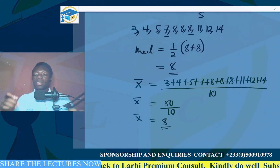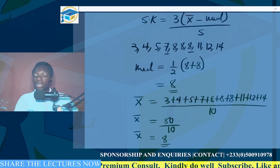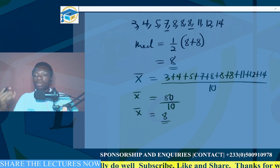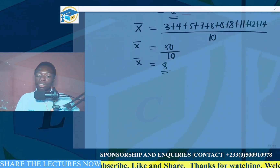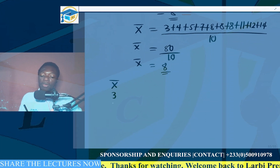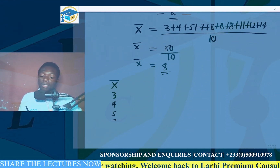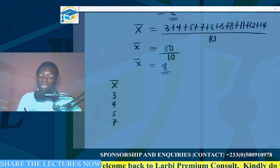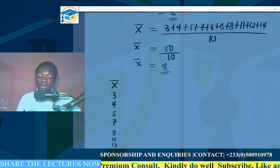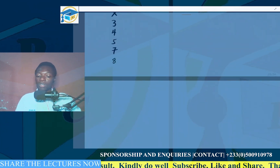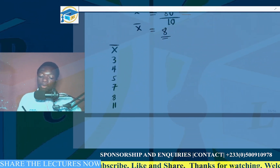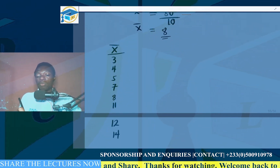Now we find the standard deviation. We list the values vertically with a column for x. The x values are 3, 4, 5, 7, 8, 11, 12, and 14. Since 8 appears three times, we add a frequency column. The frequencies are: 3→1, 4→1, 5→1, 7→1, 8→3, 11→1, 12→1, 14→1.